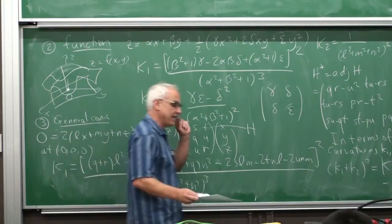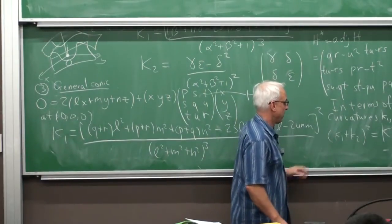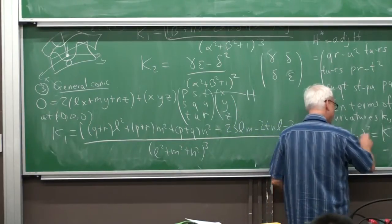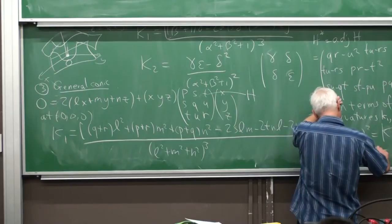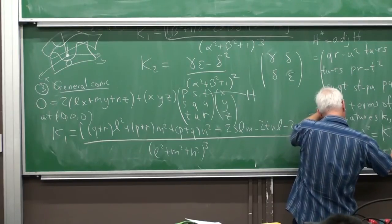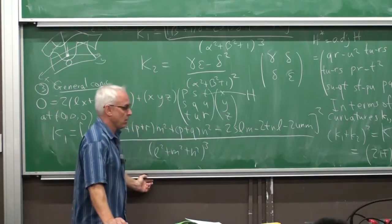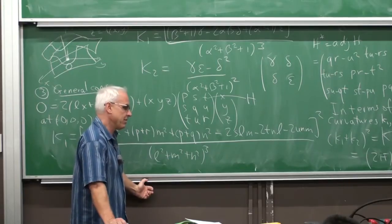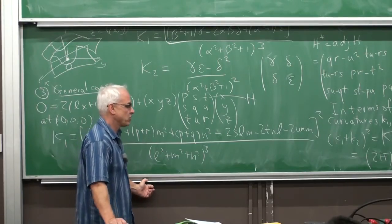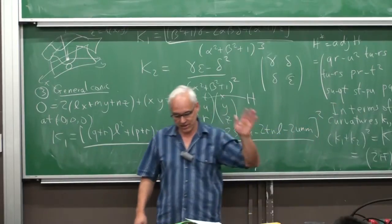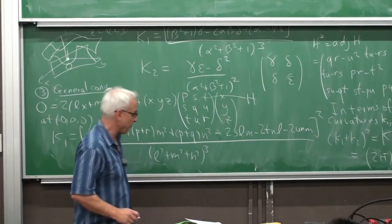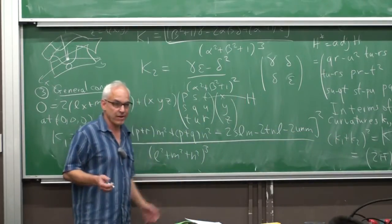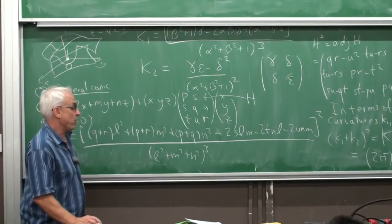This also relates to the mean curvature H: K₁ is the same as 2H². So my K₁ is a variant on the mean curvature — it has the advantage that it's rational and we don't need square roots to define it. That's why we have the square there, and because the sum of the eigenvalues is more natural from a linear algebra point of view than the average.